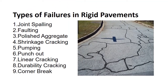Types of failures in rigid pavements are: joint spalling, faulting, polished aggregate, shrinkage cracking, pumping, punch out, linear cracking, durability cracking, and corner break.